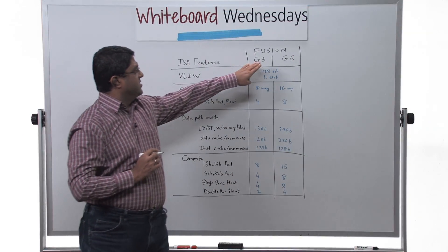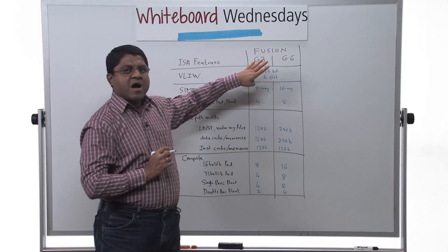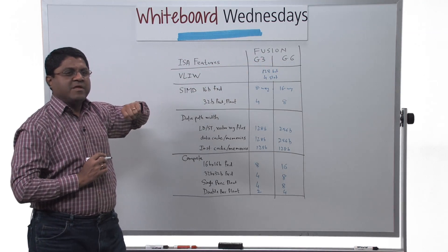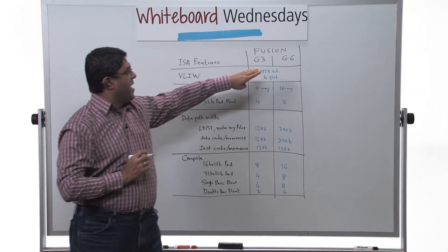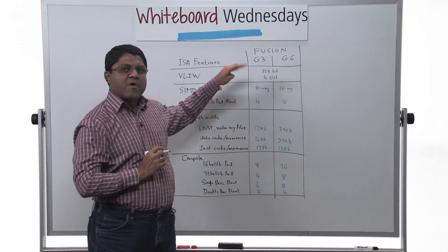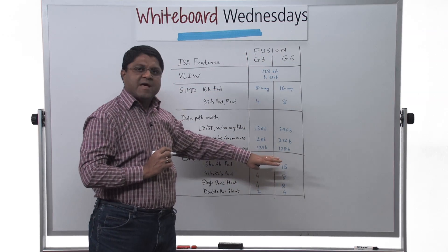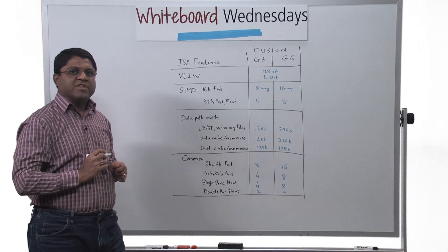So in general, the G6 and G3 are an ISA compatible family of DSPs and the G6 is twice as wide and has twice as much compute capability compared to G3.